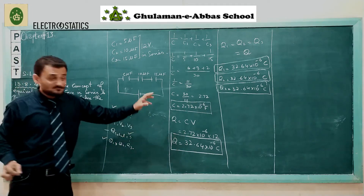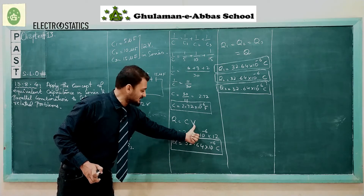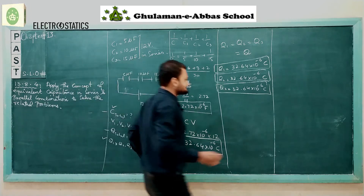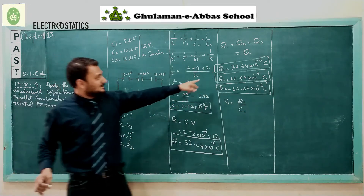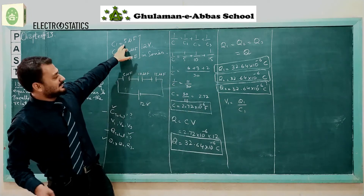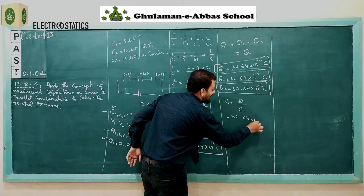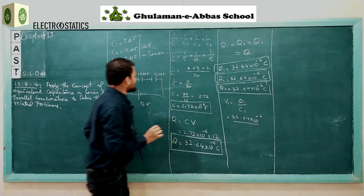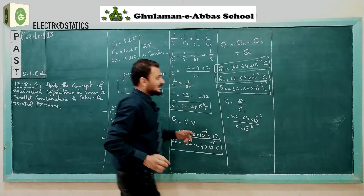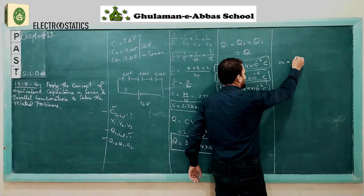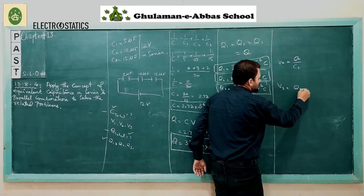Now we find V1, V2, and V3. From the formula Q = CV, we get V = Q/C. So V1 = Q1/C1. The value of Q1 is 32.64 × 10⁻⁶ and C1 is 5 microfarad = 5 × 10⁻⁶. Similarly, V2 = Q2/C2 and V3 = Q3/C3. All three Q values are equal at 32.64 × 10⁻⁶, divided by C2 = 10 × 10⁻⁶ and C3 = 15 × 10⁻⁶ respectively.